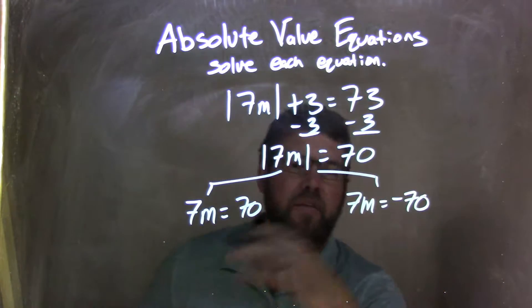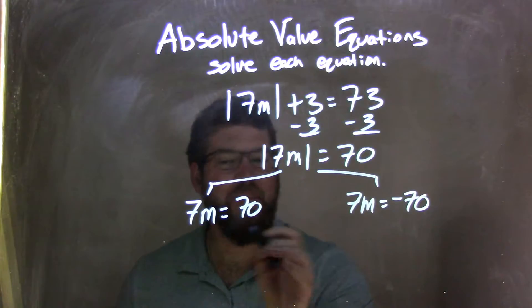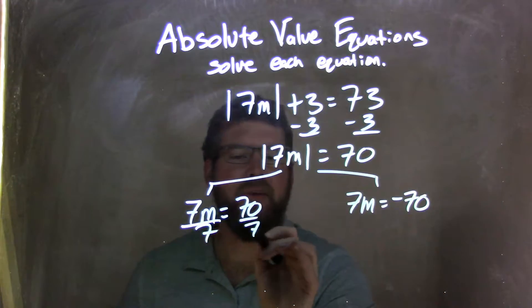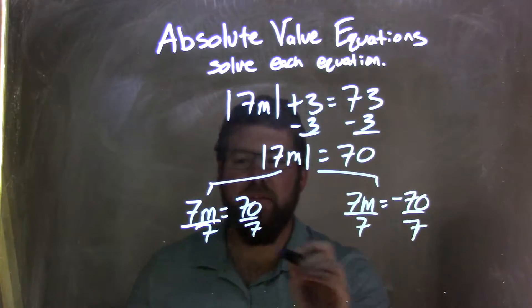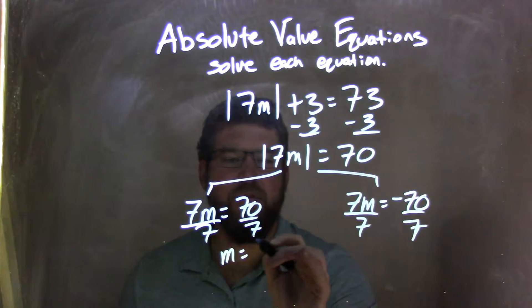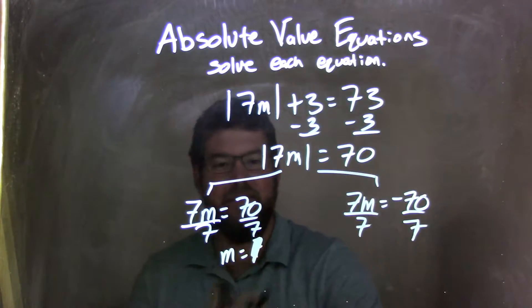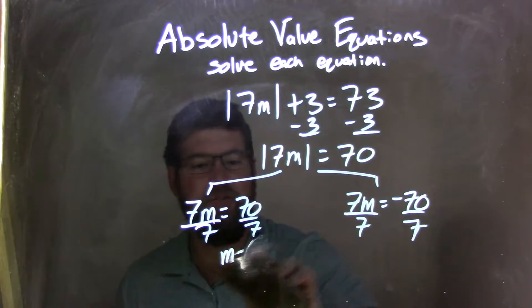From there, I then solve each equation individually, and they're both the same step of dividing by 7 on both sides of the equation. Leaving me with m equals 10. 70 divided by 7, which is 10.